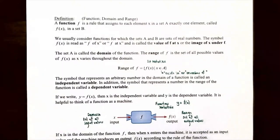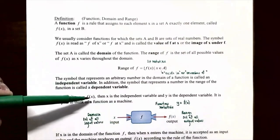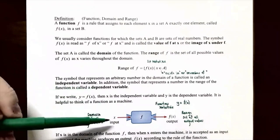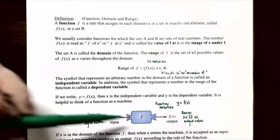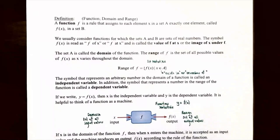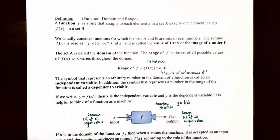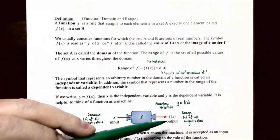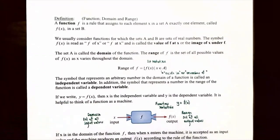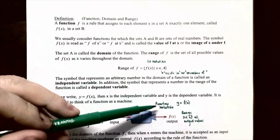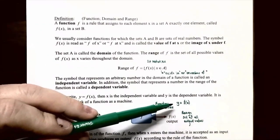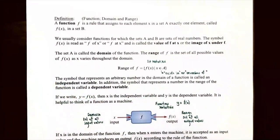One way to think about functions is that it represents a machine. You put x into this machine — this function — as an input value. The machine can be a graph, a table of values, a formula, or a verbal statement, and it will output f(x), which is a y value. This is called function notation: y represents the output whenever x is input into the function f, so f(x) equals y.